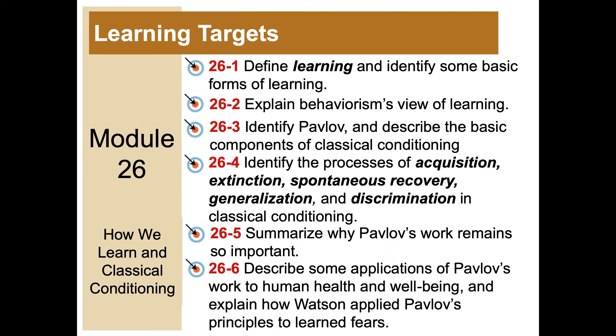Generalization and discrimination are some of the terms that seem more complicated than they are — as we talk about them in this module it'll become clearer. You should be able to summarize why Pavlov's work remains so important. I just read two articles this week about artificial intelligence related to both Pavlov's work and B.F. Skinner's work. Finally, you should describe applications of Pavlov's work to human health and well-being, and explain how John Watson applied classical conditioning principles to learned fears.